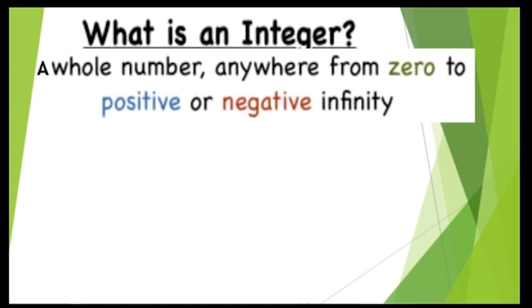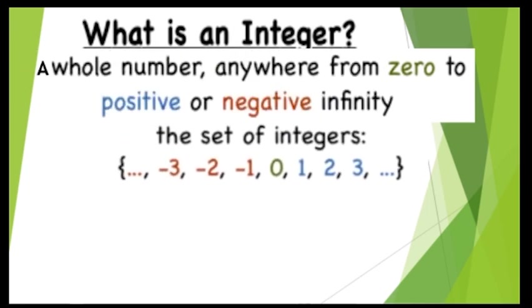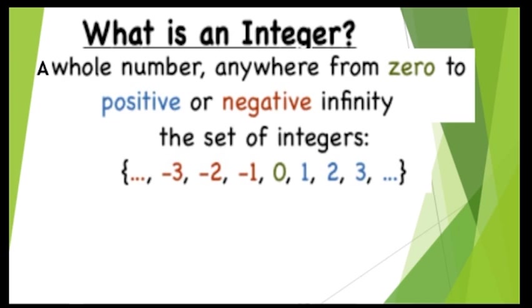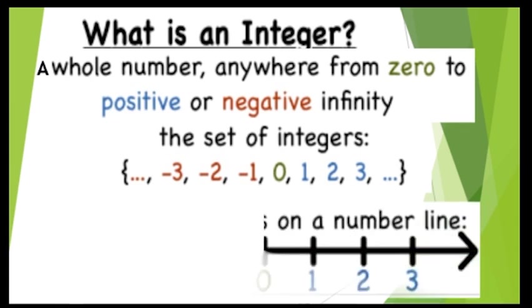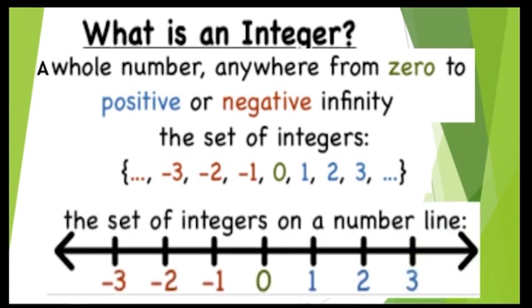A whole number ranges from 0 to positive or negative infinity. So the set of integers, written in curly braces, includes 0, and after 0: 1, 2, 3 and so on, and before 0 the negative values. We can also represent the set of integers on a number line.